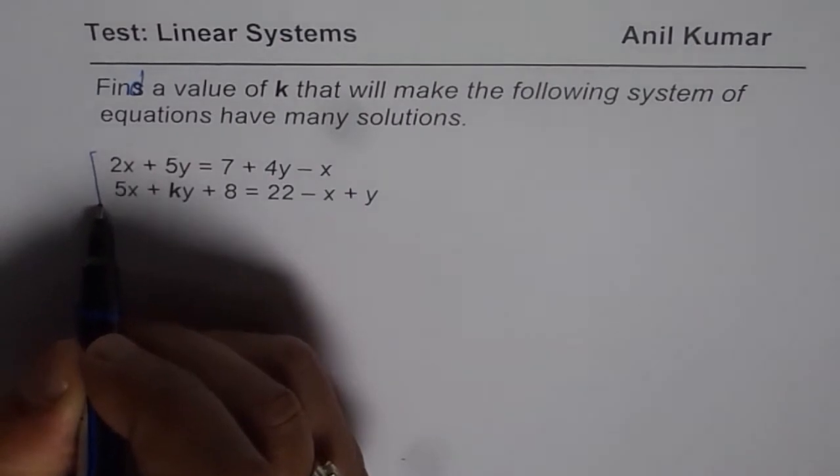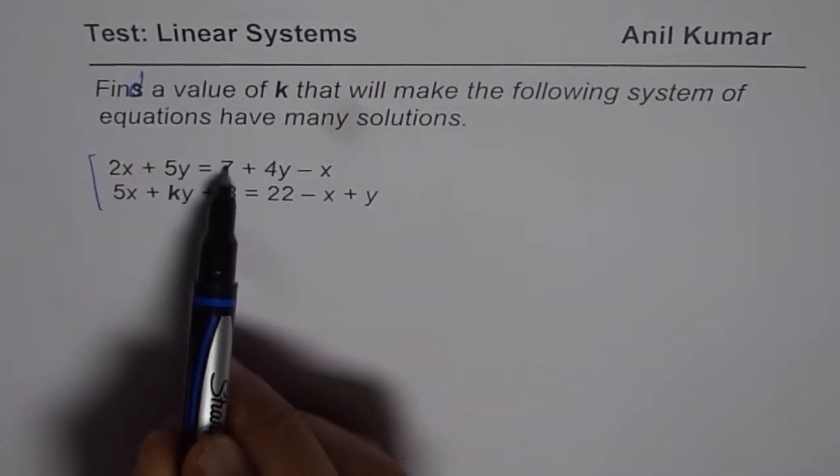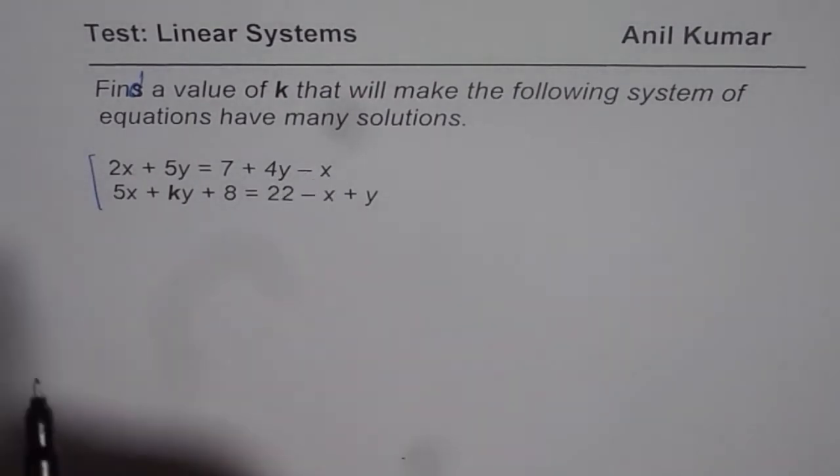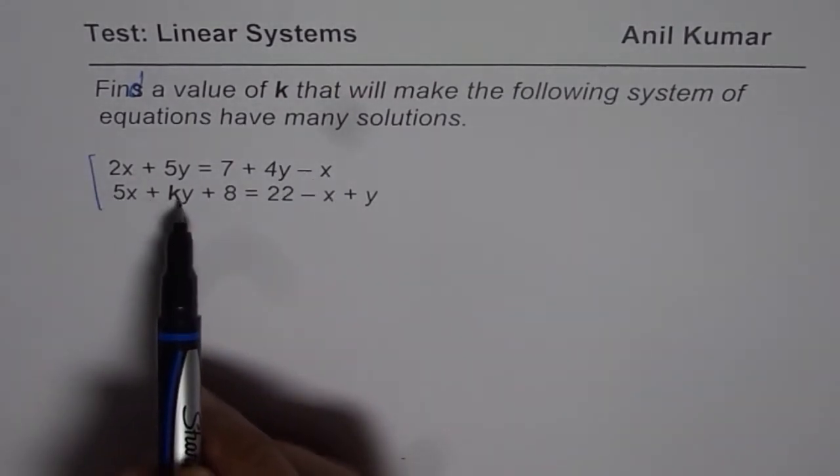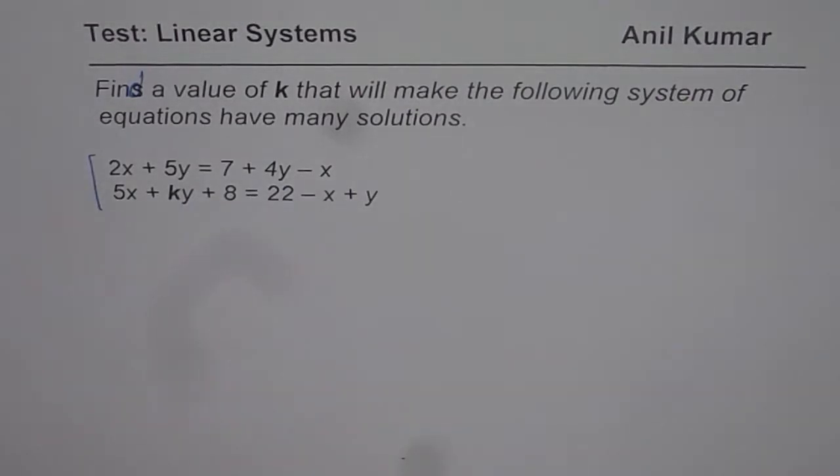So we are given two equations. First one is 2x plus 5y equals 7 plus 4y minus x. The other one is 5x plus ky plus 8 equals 22 minus x plus y.